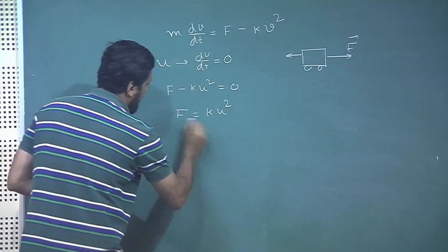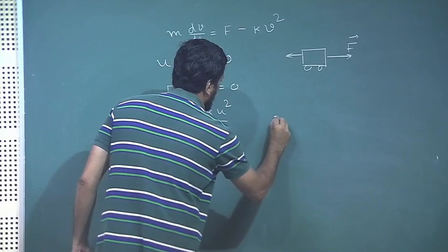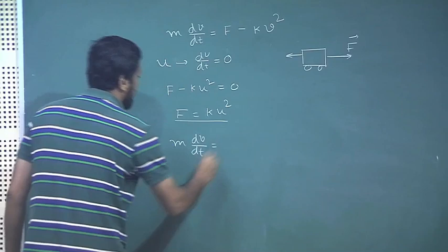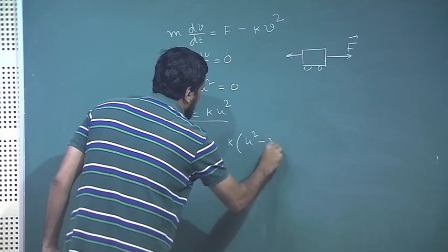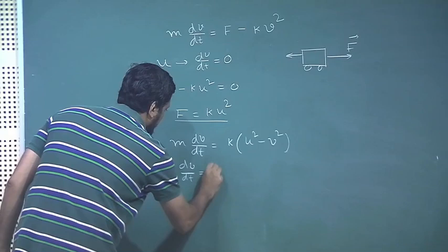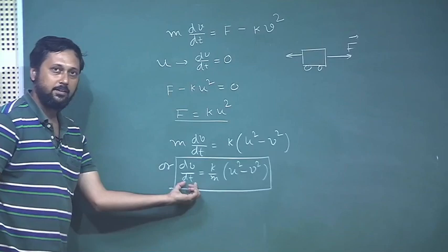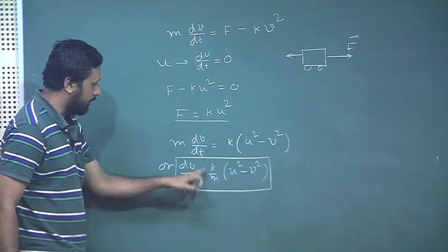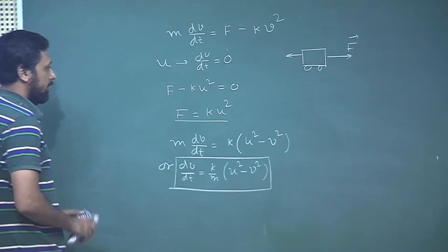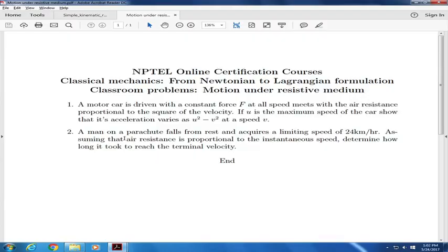Moving back to the original equation and substituting f = ku², we get m dv/dt = k(u² - v²), or dv/dt = (k/m)(u² - v²). This is the desired result: the acceleration is proportional to (u² - v²) at all speeds v, with proportionality constant k/m.